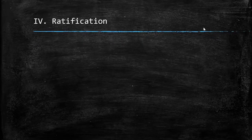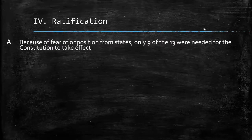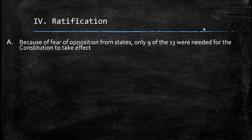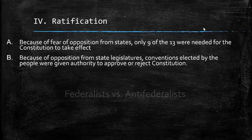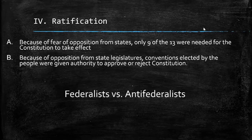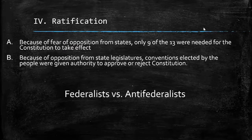Now let's take a look at the ratification process. The Constitution did not go immediately into effect after it was written — the states needed to approve it. Unlike the Declaration of Independence, which required all colonies to approve, the Constitution only required nine of the 13 states. Also, because of the opposition from state legislatures, conventions elected by the people were given authority to approve or reject the Constitution. Two sides sprung up in support and against the Constitution. These are not political parties; however, their arguments will influence future political leaders and parties.